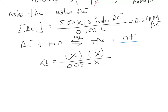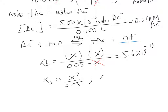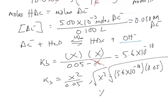The Kb expression is the same as the dissociation constant expression we've seen before. Kb equals 5.6 × 10⁻¹⁰ for acetate. Since this value is very small, we apply the approximation: Kb ≈ x² / 0.05. So x² equals 5.6 × 10⁻¹⁰ multiplied by 0.05. Taking the square root, x equals 5.3 × 10⁻⁶ M.